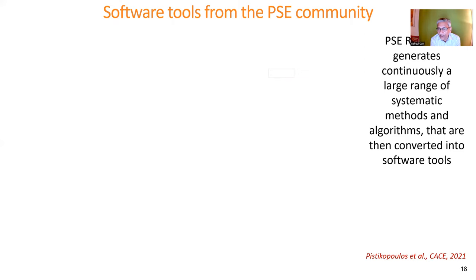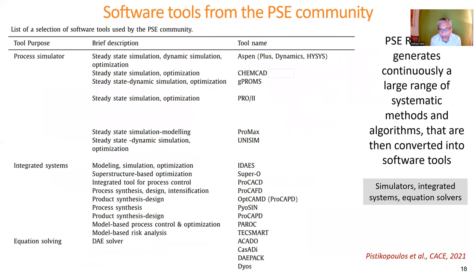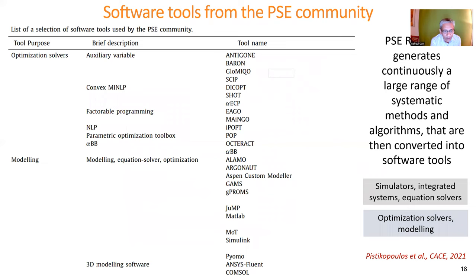PSE research continuously generates a large range of systematic methods and algorithms that are converted into software tools. These tools — including process simulators, integrated systems, equation solvers, optimization solvers, and modeling tools — are listed with references from the 2021 paper. These constitute the core methods and tools available to tackle the challenges.